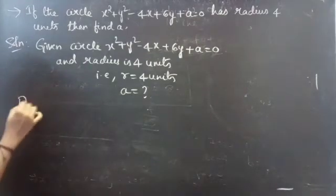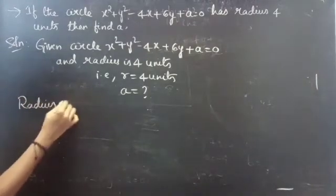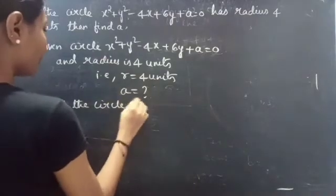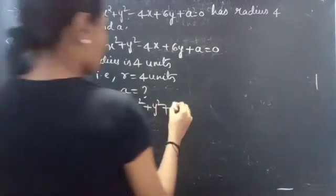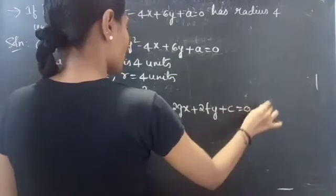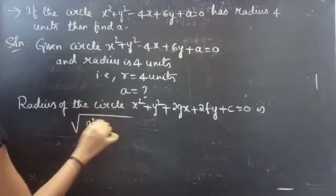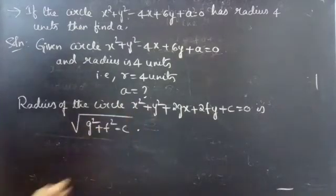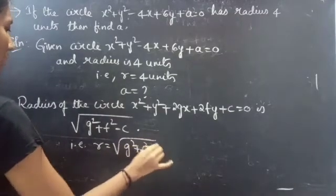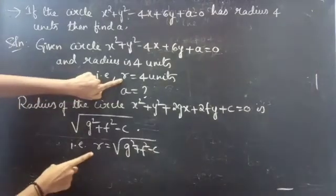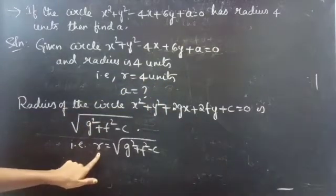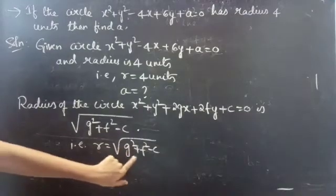We know that the radius of the circle x² + y² + 2gx + 2fy + c = 0 is given by r = √(g² + f² - c). Since r equals 4 units, we will substitute 4 here, so we get 4 = √(g² + f² - c).